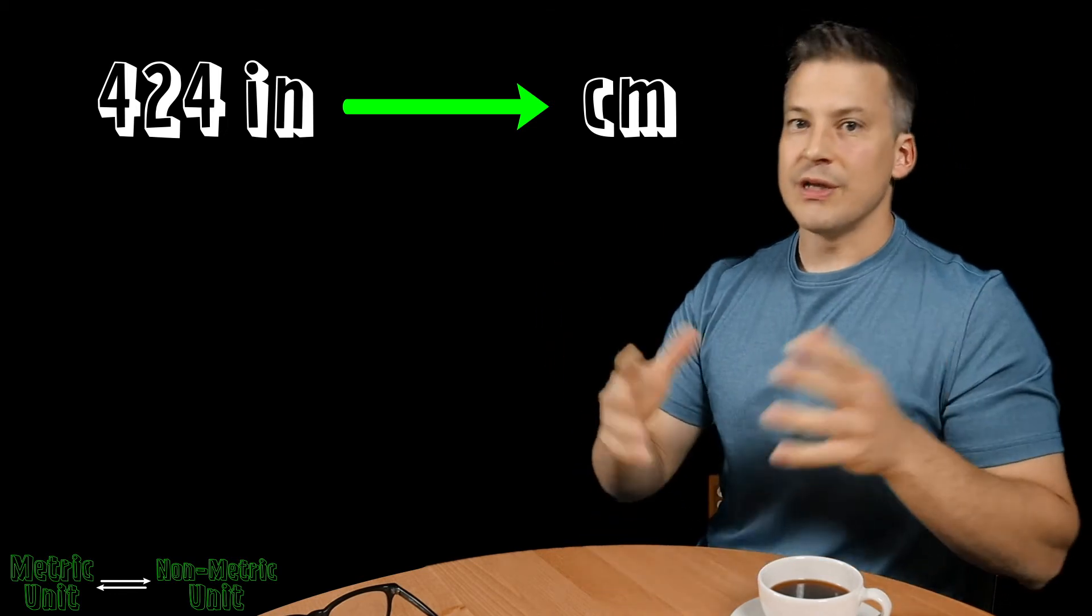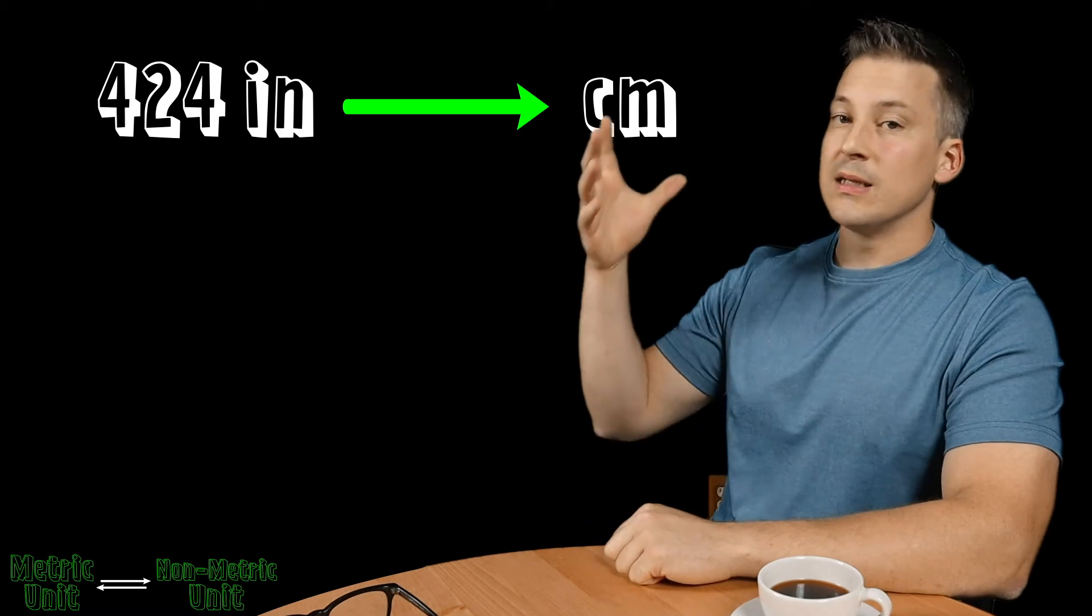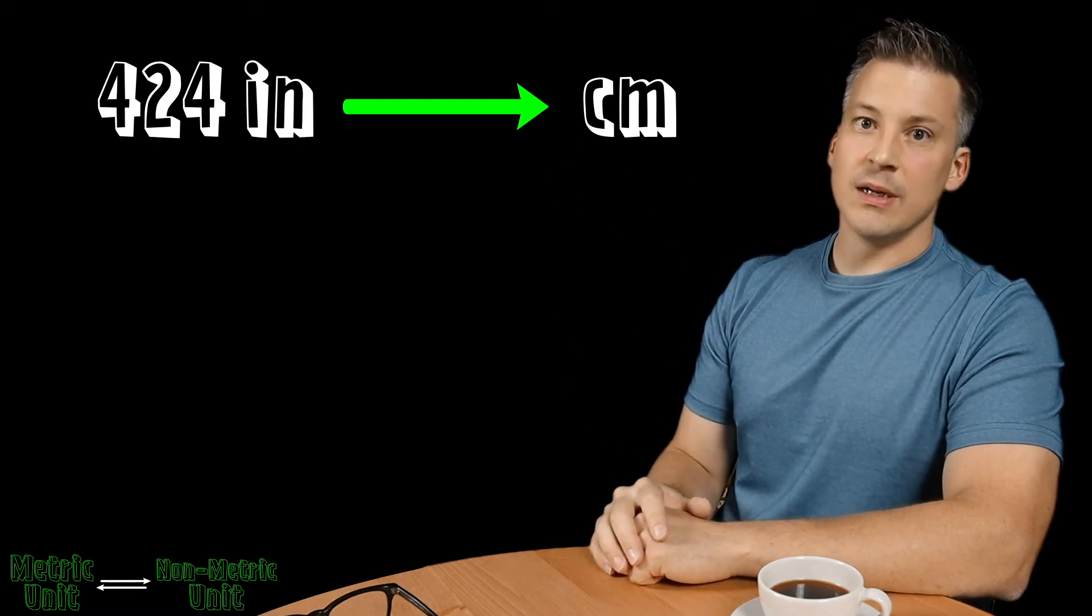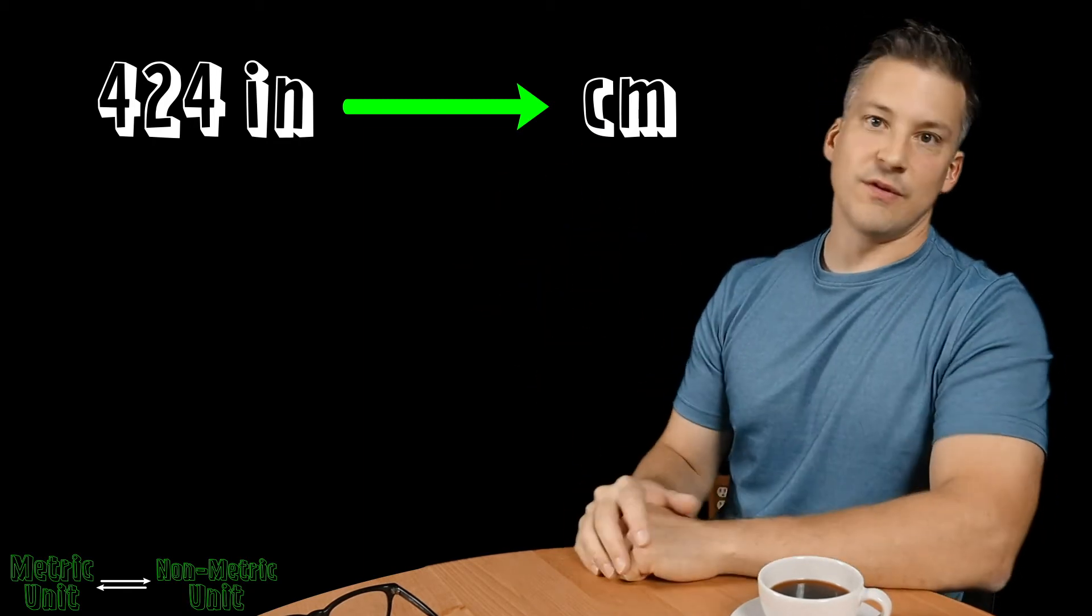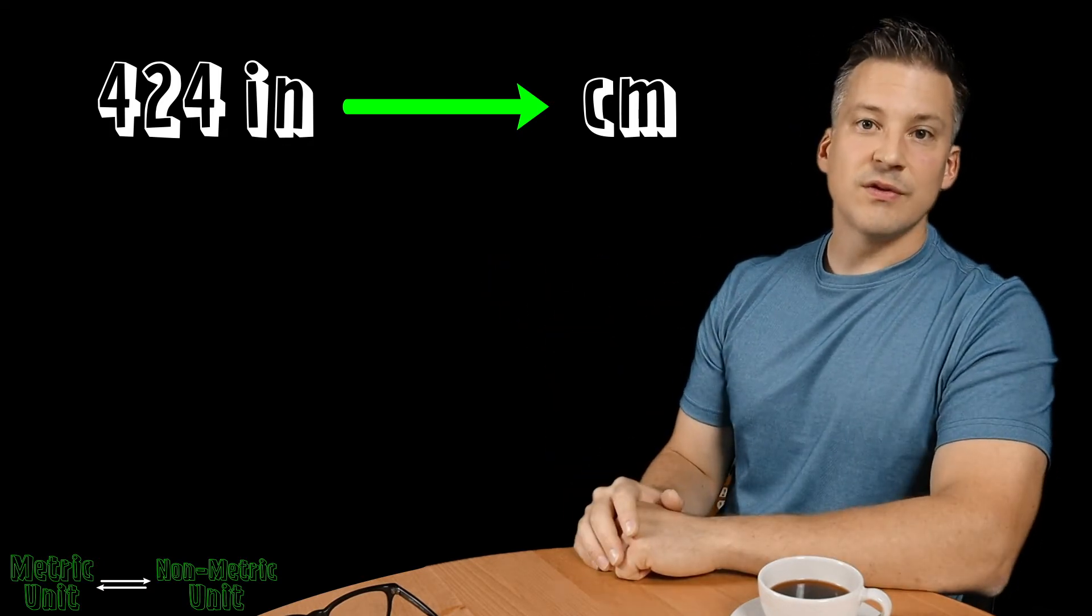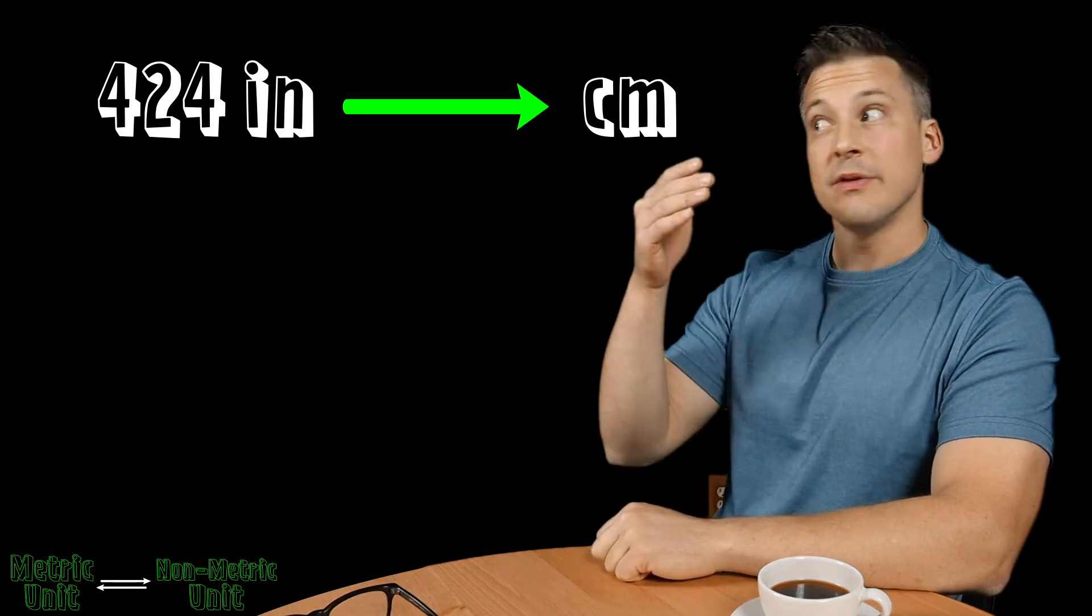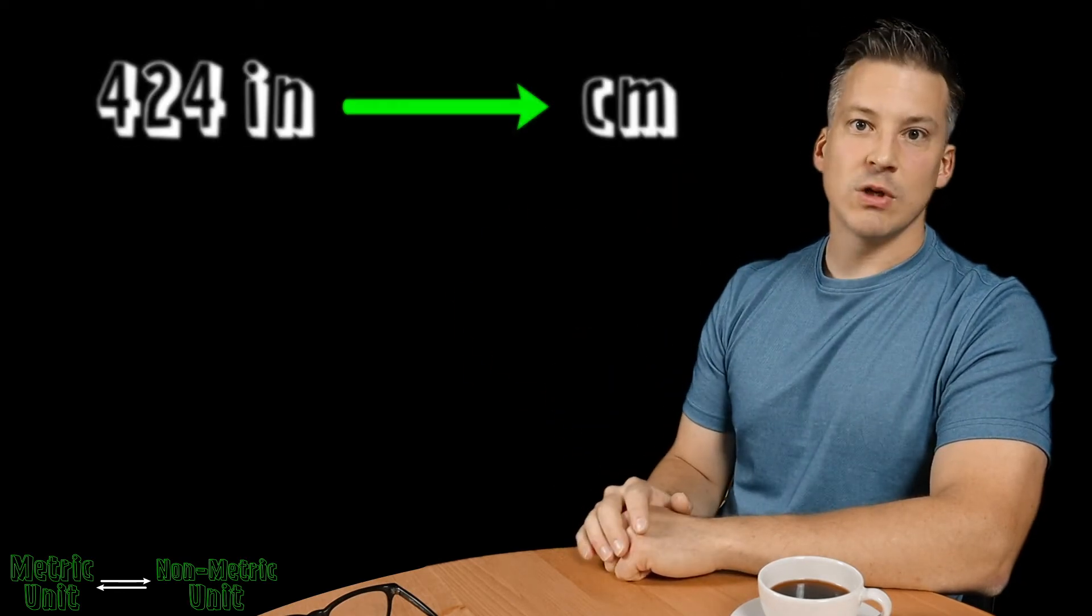Now we know at the start of this conversion that we are dealing with two different systems. The centimeter is a metric value and the inch is a non-metric value. So as soon as you know and recognize that this conversion involves a metric to non-metric or a non-metric to metric conversion, what you're going to do is you're going to follow these four steps now.